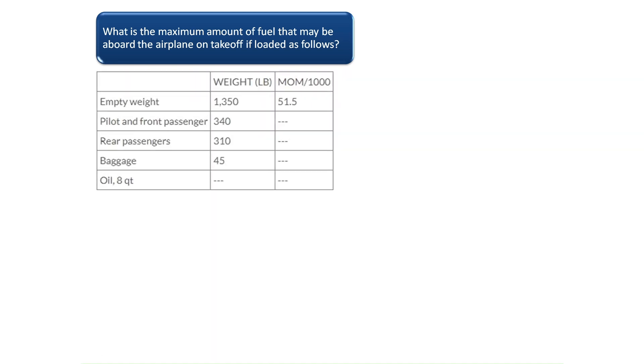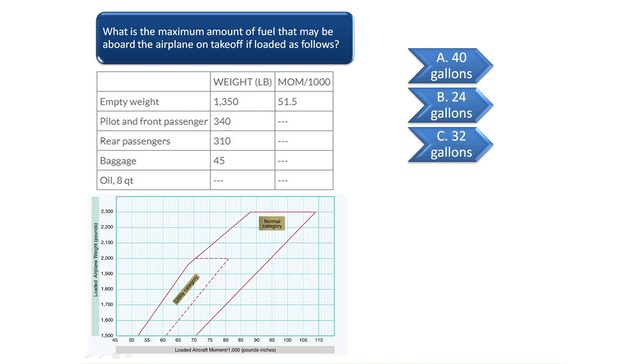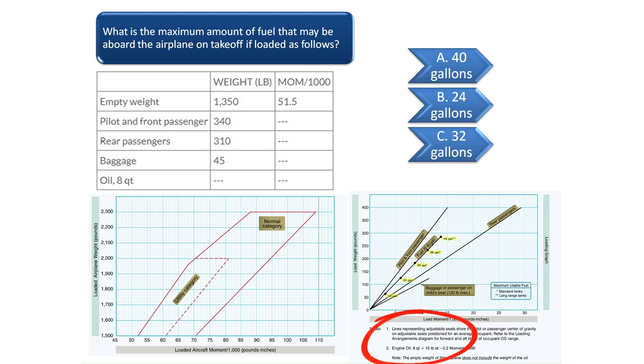On the exam, you will see weight and balance charts as shown. For the first question, we are given the empty weight of the airplane, pilot and front passenger weight, as well as the weights for the rear passengers and baggage. The chart tells us that the oil weighs 15 pounds.